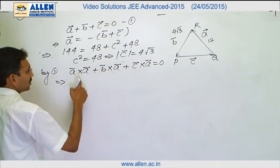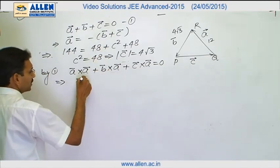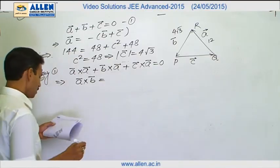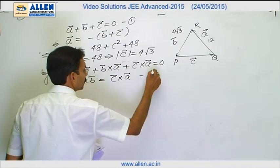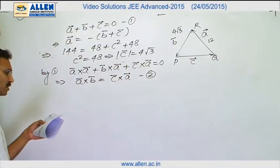This is null vector. This is when I shift it on the right hand side, it gives us a cross b equals to c cross a. I will say this is information 2. I will use it in the option c.